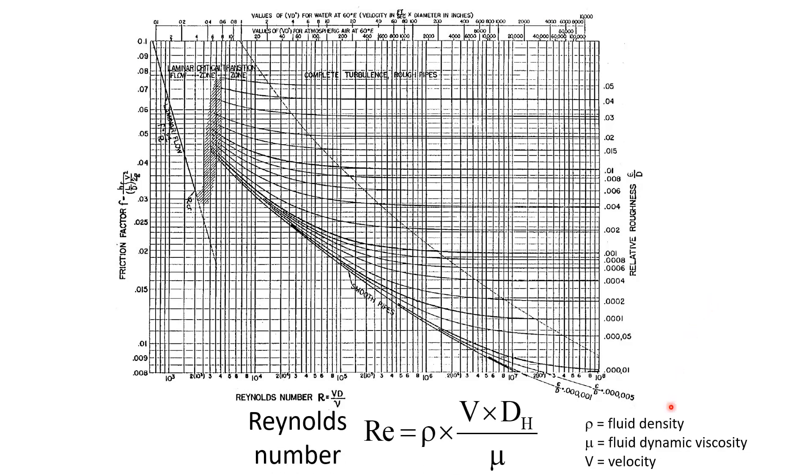The horizontal axis shows the Reynolds number, defined as Re = ρ × V × Dh / μ, where ρ is fluid density, V is fluid velocity, Dh is hydraulic diameter, and μ is fluid dynamic viscosity.